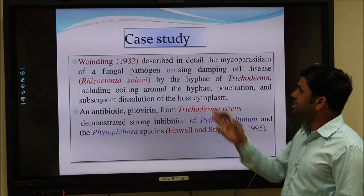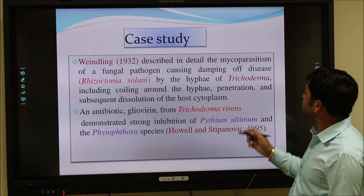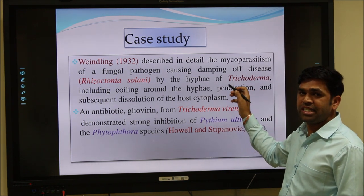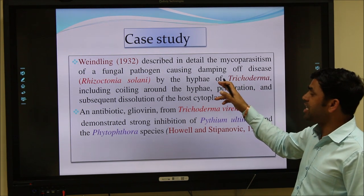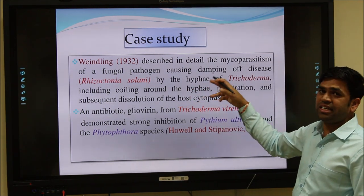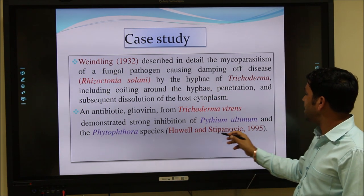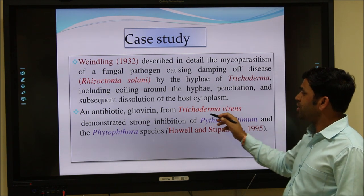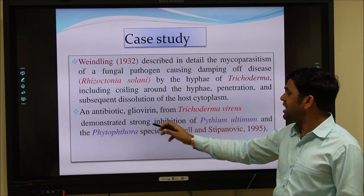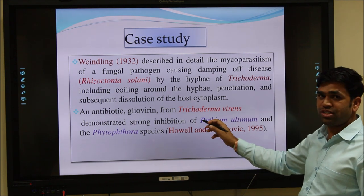There are notable case studies on biocontrol activity. A scientist in 1932 proposed that Trichoderma controls the growth of Rhizoctonia solani, demonstrating biocontrol activity. In another study, Howell and Stipanovic in 1935 showed that Trichoderma virens produces the antibiotic glioviride, which inhibits the growth of Pythium ultimum and Phytophthora fungi — two different pathogens of plants.